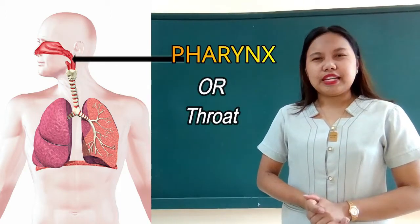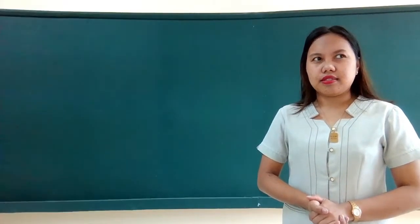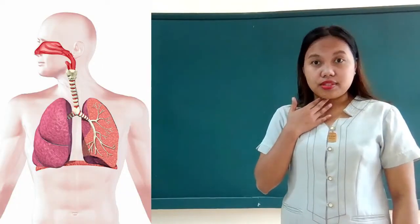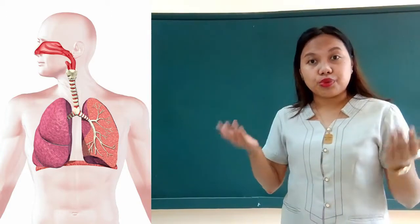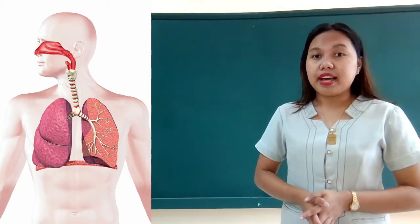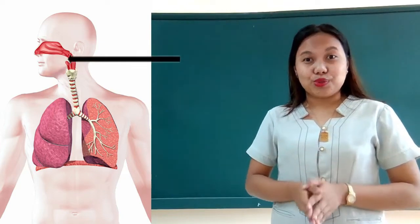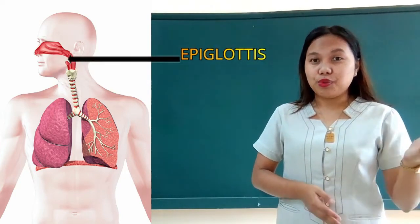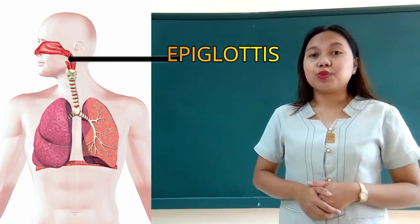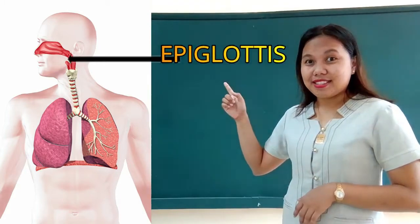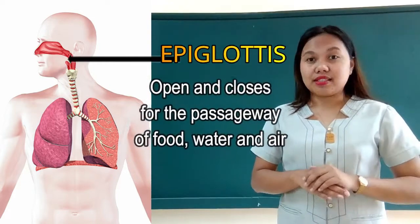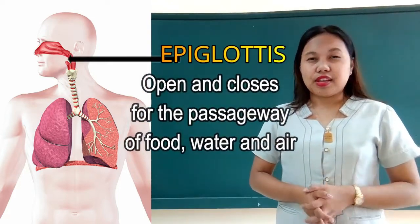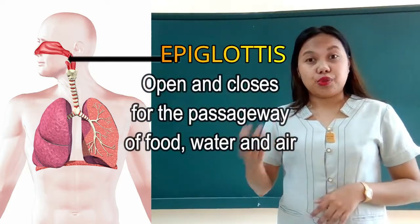Alright, so if the air enters, and what if there's food? Remember that in your pharynx or throat, it has two tubes. That is for the food, and for the air. By that time, the one that controls the passageway for food and for air is what you call your epiglottis. Your epiglottis is the one that flaps open and closes when it enters a food and for air.